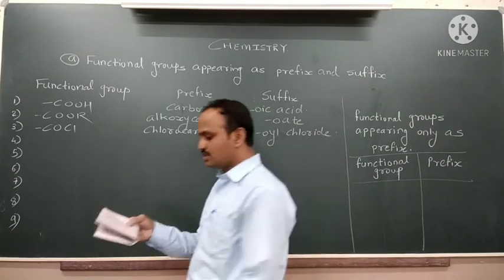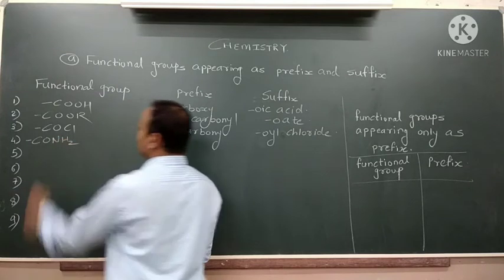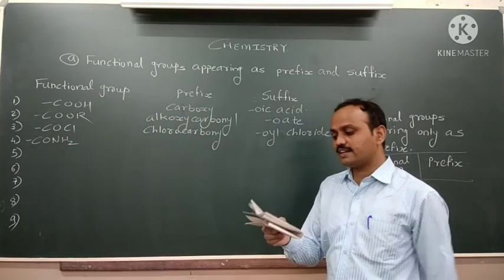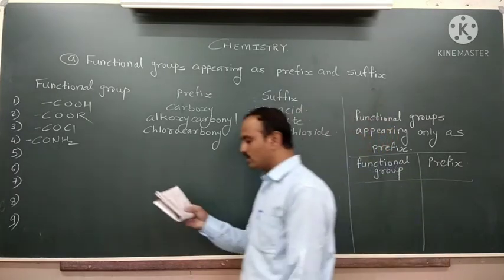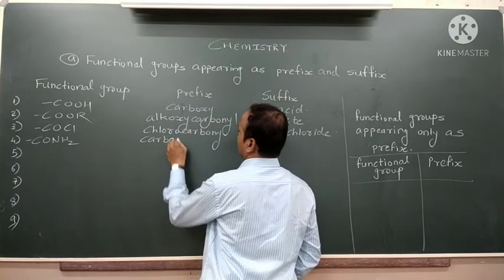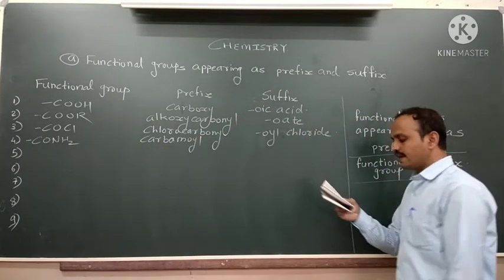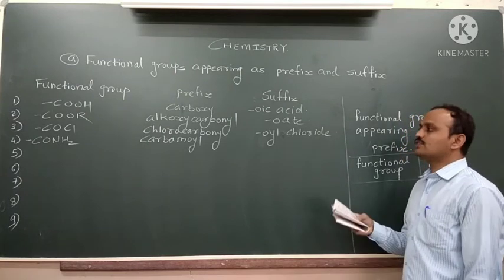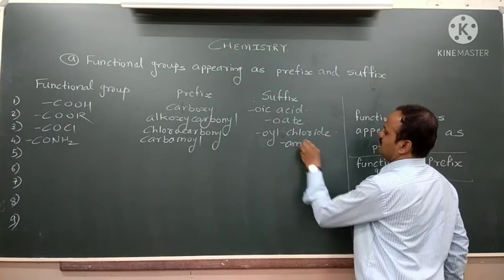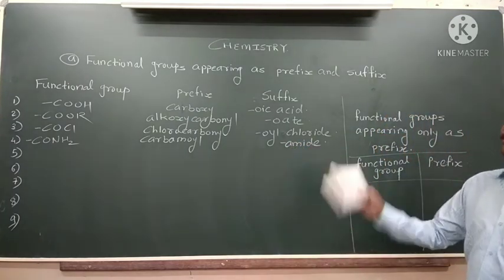Next is –CONH₂, the amide functional group. When the amide functional group acts as a substituent prefix, the word used is 'carbamoyl'. When it acts as a parent functional group, its name is written as the suffix '-amide', for example, ethanamide, propanamide, etc.